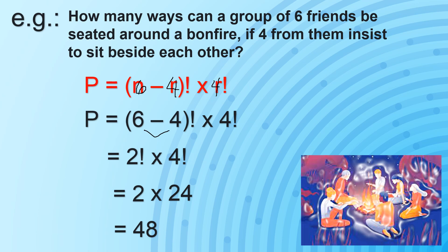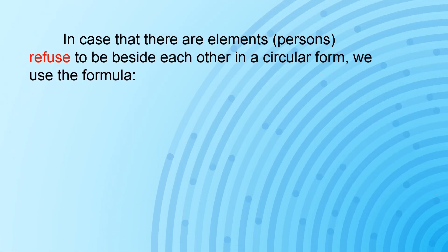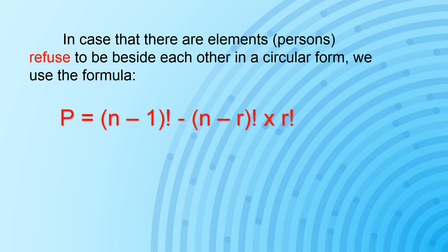Now, there are cases where elements or persons refuse to be beside each other in a circular form — they don't want to be seated beside each other. For this, we use a different formula: P equals (n minus 1) factorial minus (n minus R) factorial times R factorial. This is essentially the combination of the basic circular permutation minus the permutation for sitting beside each other.